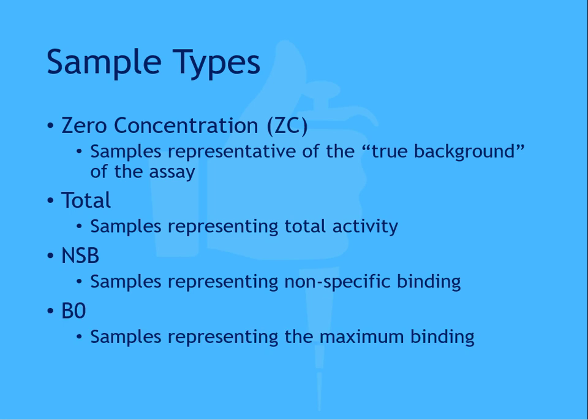B0, or maximum binding samples, will find the maximum possible signal for the assay. This is achieved by adding a saturating amount of a sample, followed by a saturating amount of the label detector. A B0 sample is required to calculate the percent bound for a sample, and this format is often used in a competitive antigen capture assay. However, even in a non-competitive assay, it's a good idea to include a B0 sample to define the upper limit of the signal for the assay.